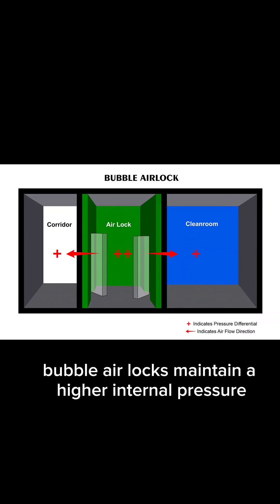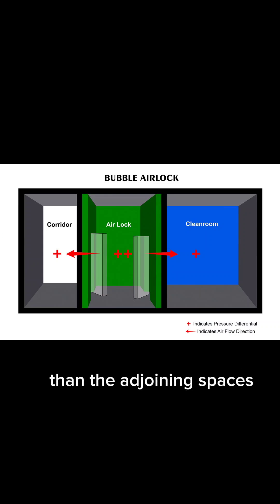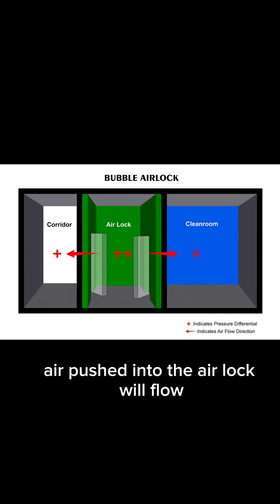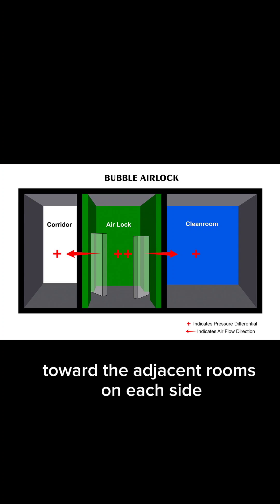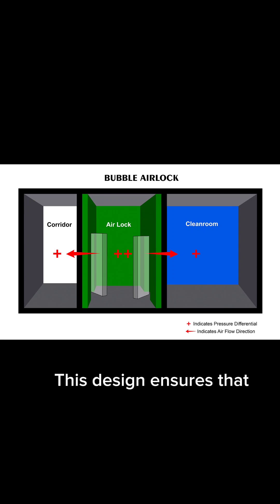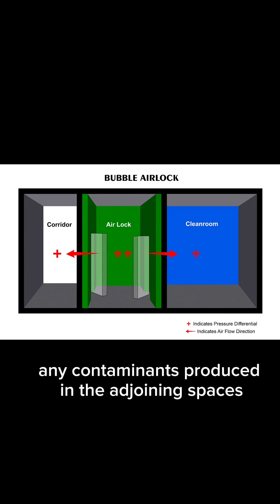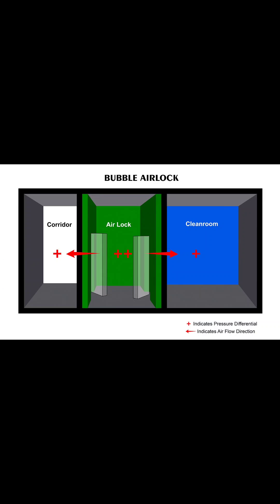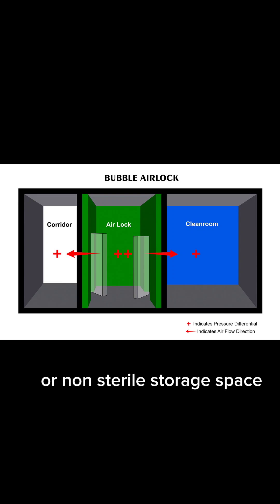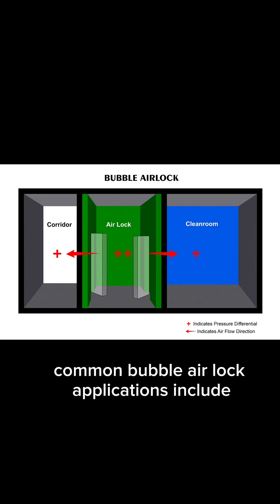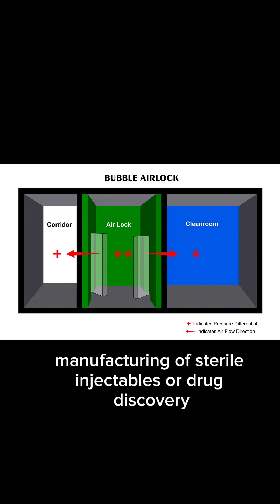Bubble airlocks maintain a higher internal pressure than the adjoining spaces. Given this pressure difference, air pushed into the airlock will flow toward the adjacent rooms on each side. This design ensures that any contaminants produced in the adjoining spaces, such as a manufacturing area or non-sterile storage space, do not migrate into the airlock. Common bubble airlock applications include manufacturing of sterile injectables or drug discovery.